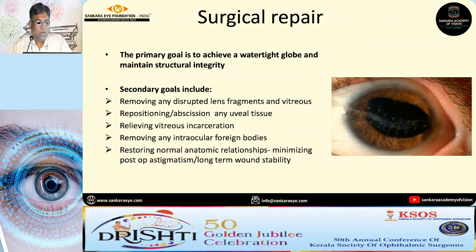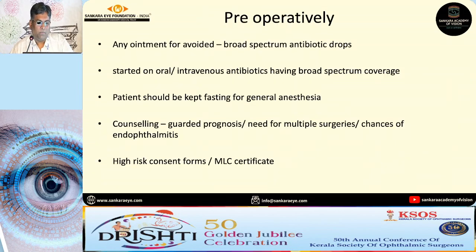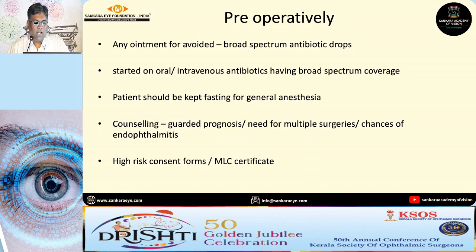The primary goal is to achieve a watertight globe and to maintain structural integrity as much as possible. The secondary goals are to remove any disrupted lens fragments, reposition uveal tissue if there is prolapse, relieve vitreous incarceration, or remove any visible foreign body. It is very important to note that no antibiotic ointment should be given in an open globe injury; generally broad spectrum antibiotic drops are preferred.